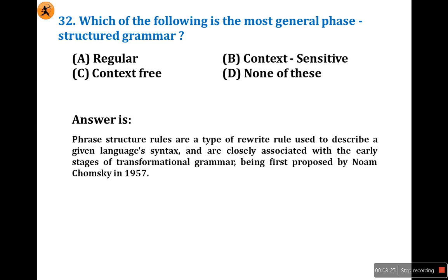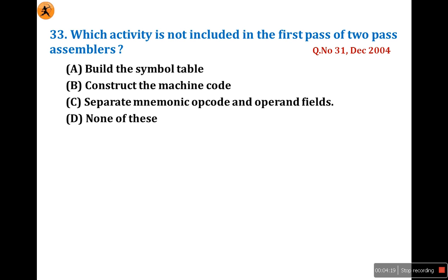The closely related grammar is context-sensitive grammar, which is Type 1. Type 0 is unstructured — there is no structure, no rule. Type 2 is context-free, Type 3 is regular. So the answer is option B: context-sensitive grammar is the most general phrase-structured grammar. You should know the types of grammars because definitely one question every year is based on this topic.